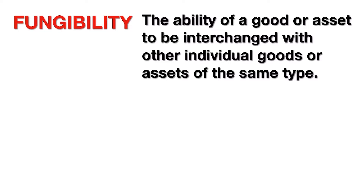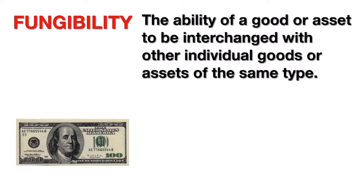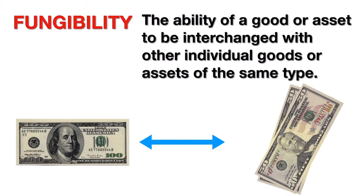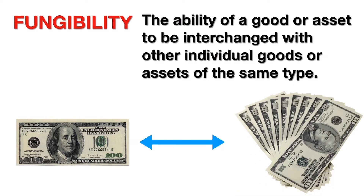Fungible goods are goods that are mutually interchangeable with other goods of the same kind. Let's look at some examples. If you lend your friend $100, he can pay you back using a different $100 note or even using change. This is because cash is highly fungible.